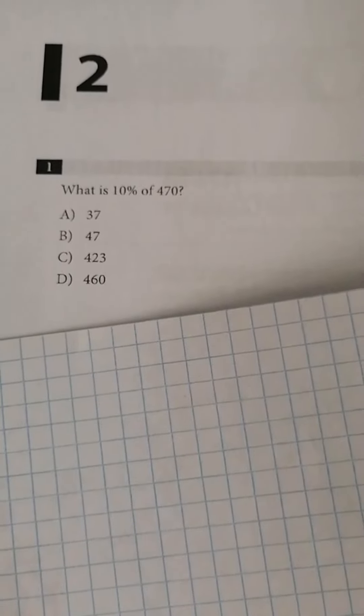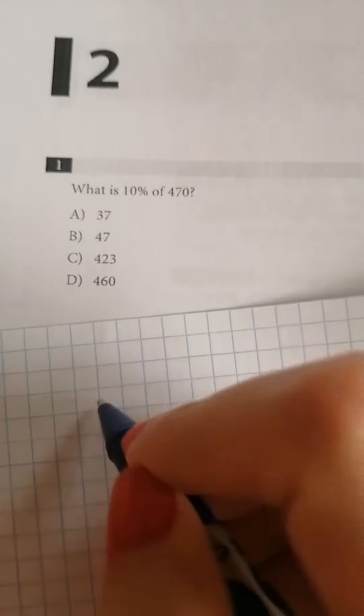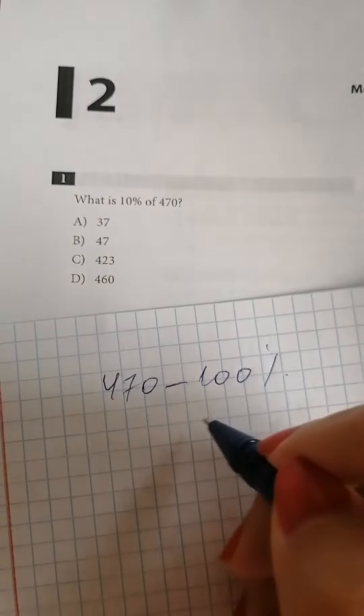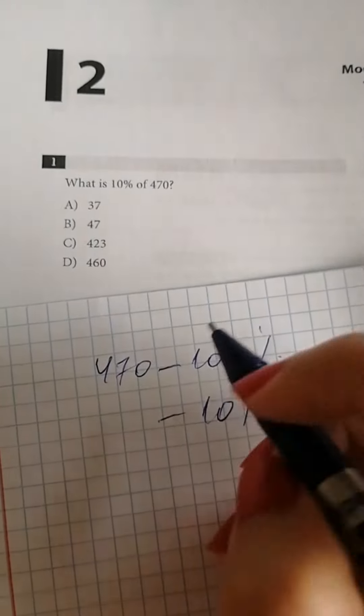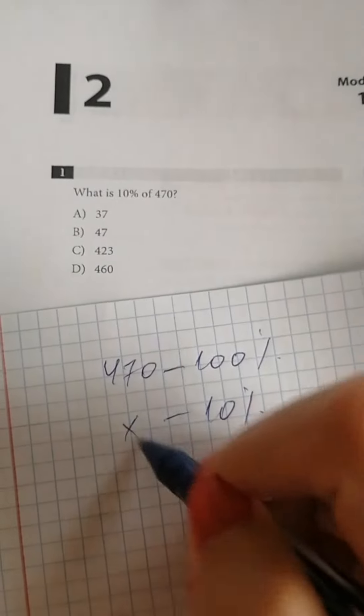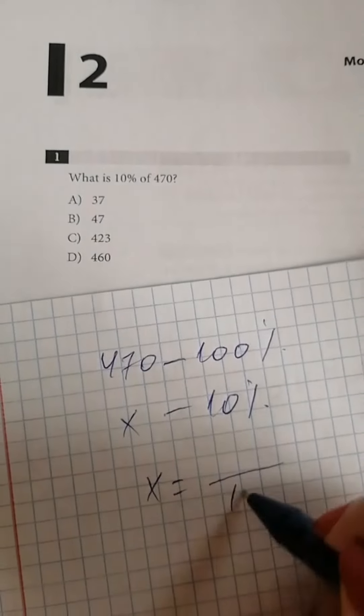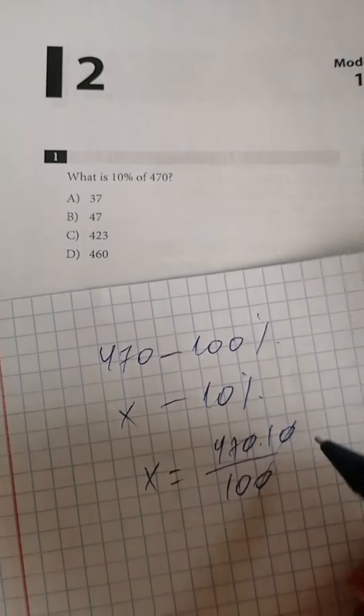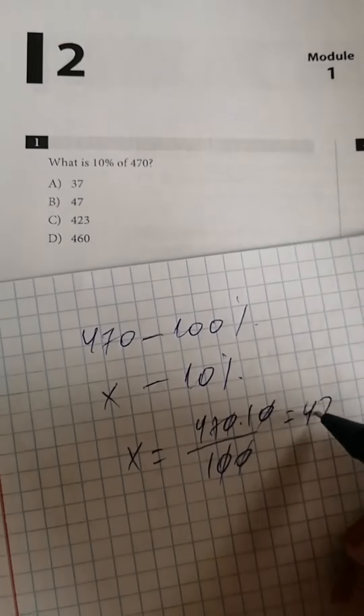What is 10% of 470? If 470 is 100%, the 10% is found by proportion. Therefore, it is 47.